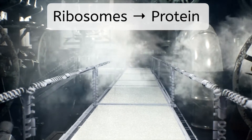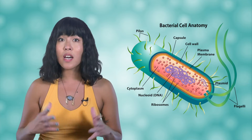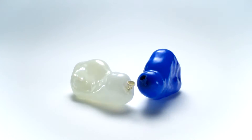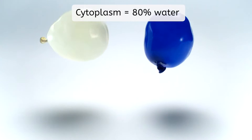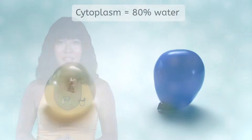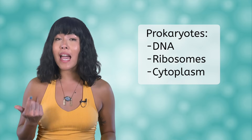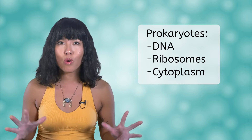Without proteins, the cell wouldn't survive, so these factories are very important. The empty space inside the cell is filled with a jelly-like substance called cytoplasm — a little like the water in a water balloon. It's actually about 80% water; the rest is various nutrients, enzymes, and compounds. Prokaryotic cells are quite simple inside: mostly just DNA, ribosomes, and cytoplasm. The cells we'll look at next time have lots more going on inside.